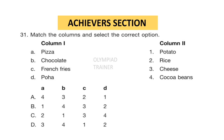The next section is the Achievers section. Each question carries two marks. Question 31: Match the columns and select the correct option. Column 1: Pizza, Chocolate, French fries, Poha. Column 2: Potato, Rice, Cheese, Cocoa beans. Answer is option D — Pizza with cheese, Chocolate with cocoa beans, French fries with potato, Poha with rice.